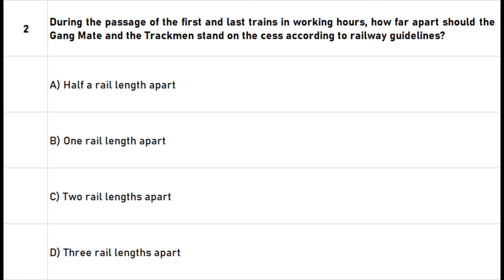Question 2: During the passage of the first and last trains in working hours, how far apart should the gang mate and the trackman stand on the sess according to railway guidelines? A. Half a rail length apart. B. One rail length apart. C. Two rail lengths apart. D. Three rail lengths apart. The right answer is option B: One rail length apart.